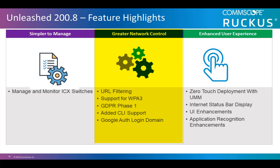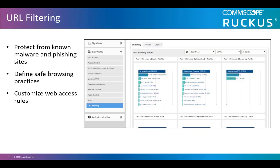Greater network control is our next category of updates. This includes URL filtering, support for WPA3, GDPR phase 1, added CLI support, and Google authentication and login domain. URL filtering technology helps organizations prevent computer users from viewing inappropriate websites or content, or prevent access to known malware hosts. The filter checks the origin or content of a web page against a set of rules provided by the company or person who installed the URL filter. With Unleashed URL filtering, you are protected from known malware and phishing sites. You can define safe browsing practices, especially in a school setting, and customize the web access rules.